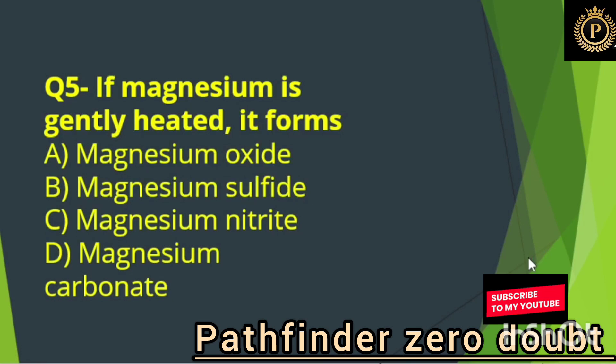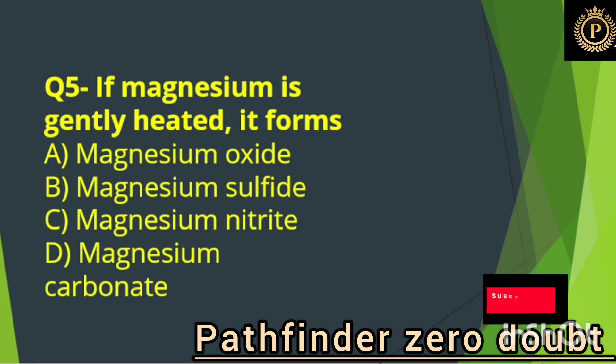If magnesium is gently heated, it forms: Option A, magnesium oxide.